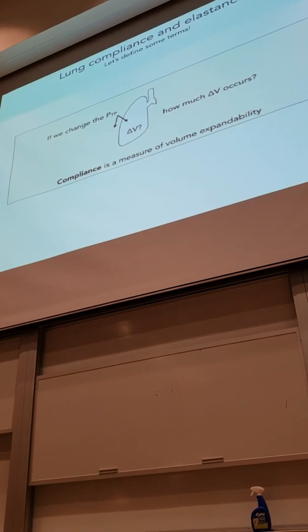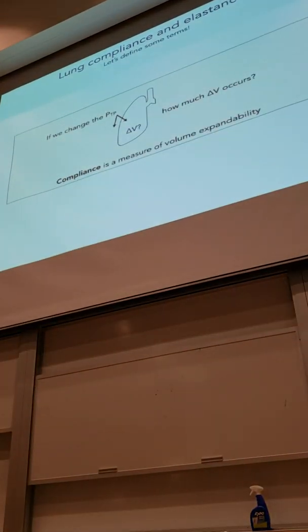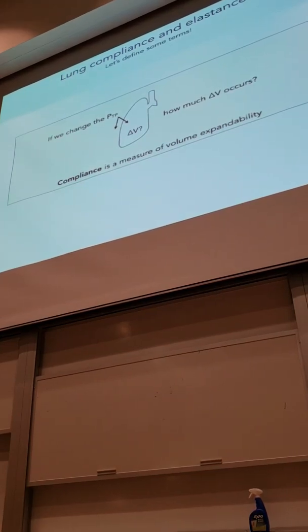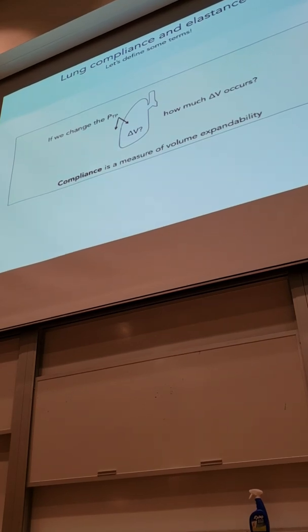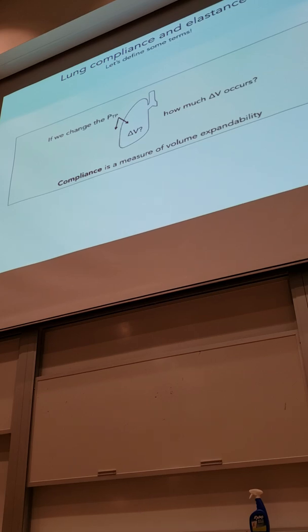So if we have a change in our transpulmonary pressure, let's say we inhale, and that makes that transpulmonary pressure greater, we want to know how much volume change do we get in response to that pressure change. That's a question of compliance. So when we're asking about issues of compliance, we're basically asking the question about the properties of the lung's expandability.